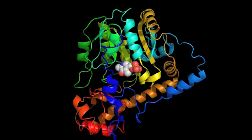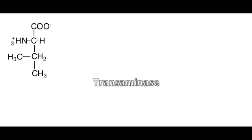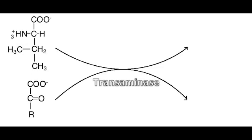An alpha-ketoacid is an acid, so it has a carboxylic group, and bonded to that is a carbon. The first carbon bonded to the carboxylic group is the alpha-carbon. This carbon is a keto-carbon, so it has a double bond with an oxygen atom, and it's bonded on one side to the carboxylic group and on the other side to another lateral chain, which may vary from molecule to molecule.